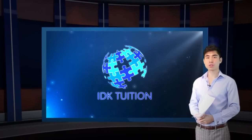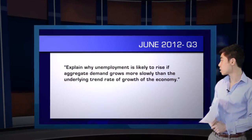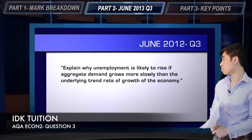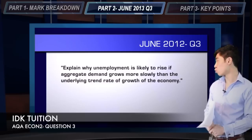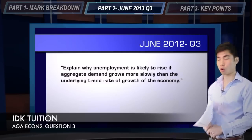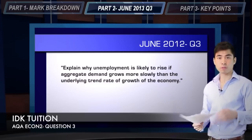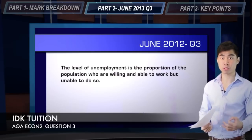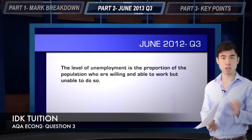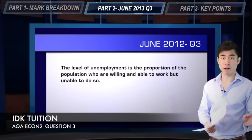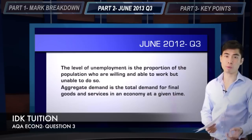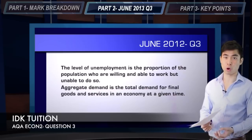Let's quickly run through June 2012, question number three. The question is essentially exploring the link between slowing aggregate demand, the underlying trend rate of growth, and unemployment. Right there you can see straight away we've got three key terms to define. Remember, you only need to define two of these — you should never have a problem picking out two applicable definitions for your 12 mark question.